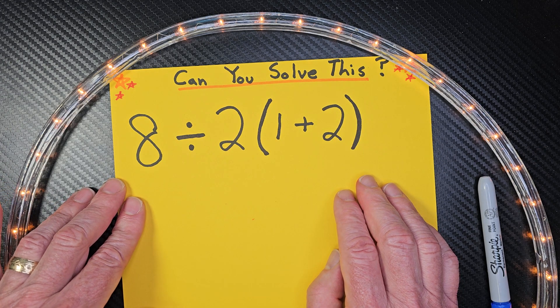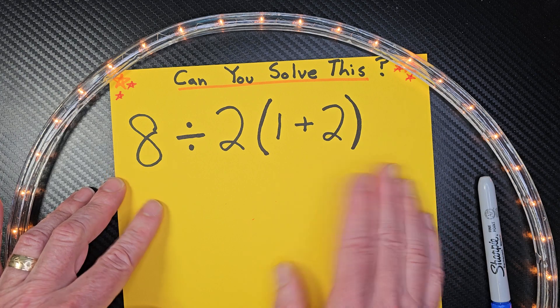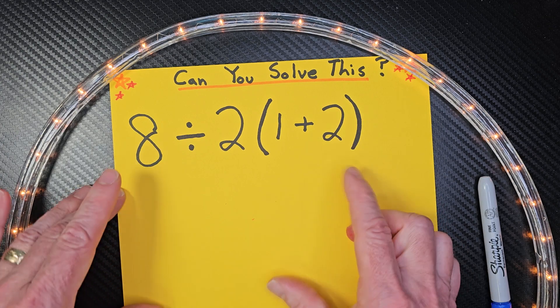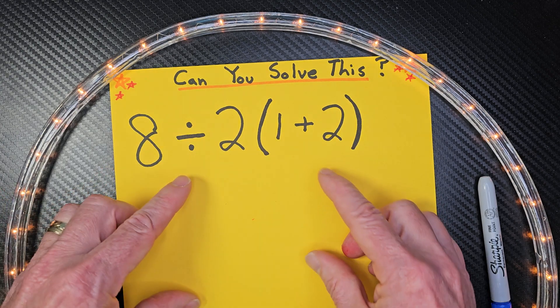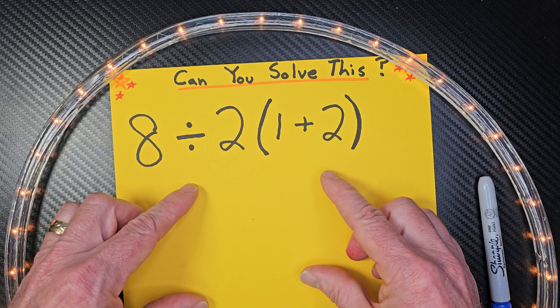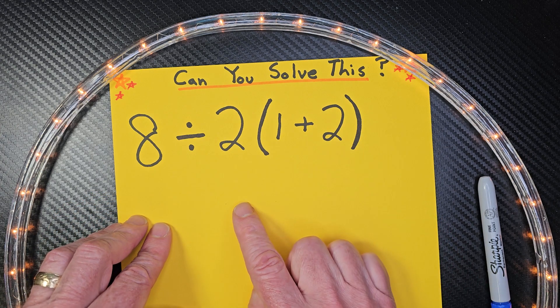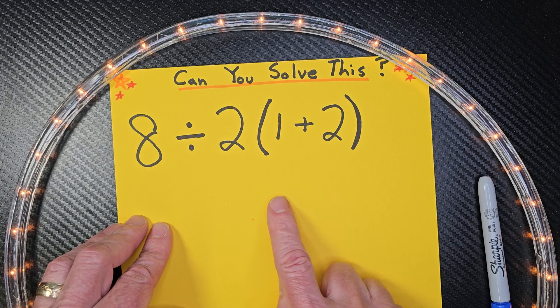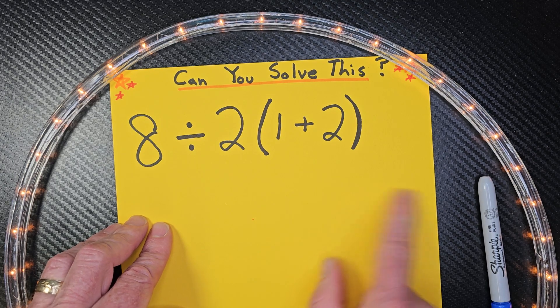So again, on all my videos you'll hear me repeat the order of operations. That is what is inside parentheses you do that first, and then exponents, and then multiplication division from left to right, and then finally addition and subtraction from left to right.